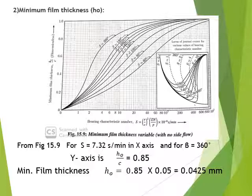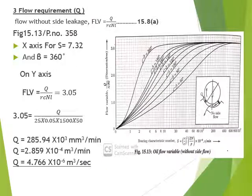For minimum film thickness, using the same graph with x-axis S = 7.32 and β = 360°, the y-axis gives h₀/C = 0.85. Therefore, minimum film thickness h₀ = 0.85 × 0.05 = 0.0425 mm.